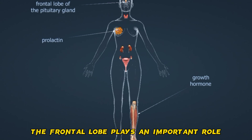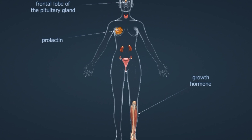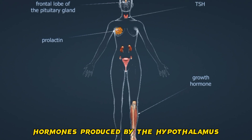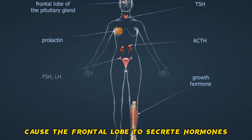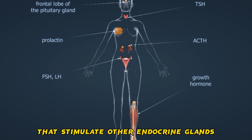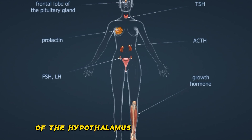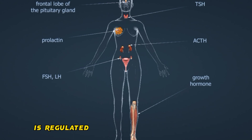Acromegaly is the abnormal growth of the tongue, hands, nose, and ears. The frontal lobe plays an important role in the regulation of other endocrine glands — hormones produced by the hypothalamus cause the frontal lobe to secrete hormones that stimulate other endocrine glands.